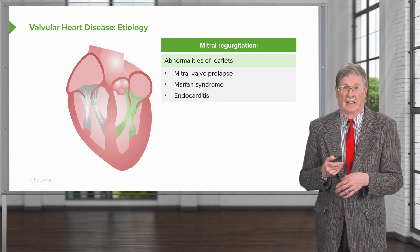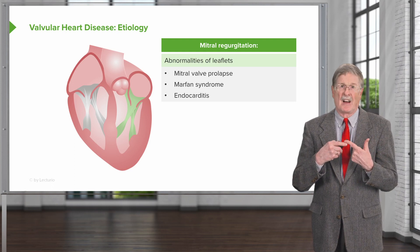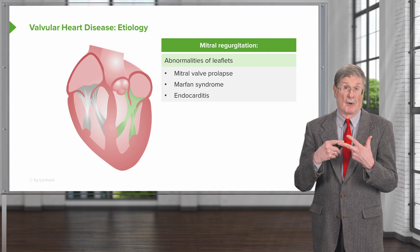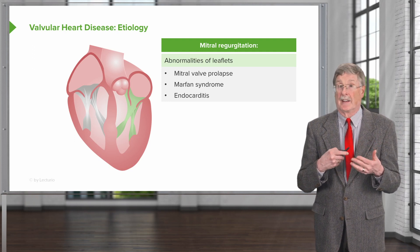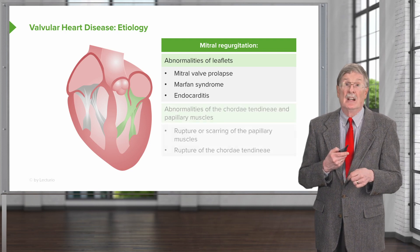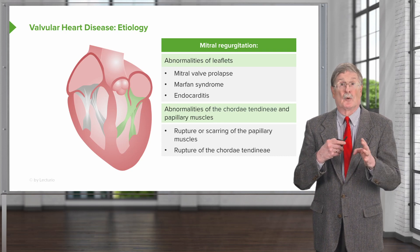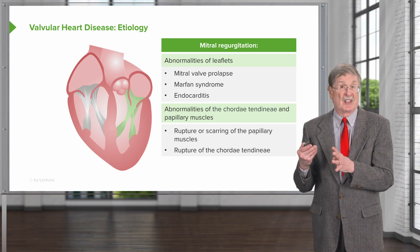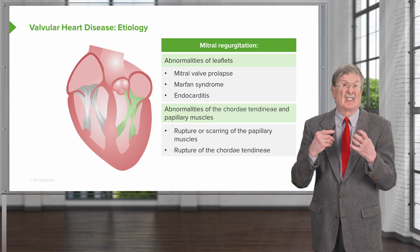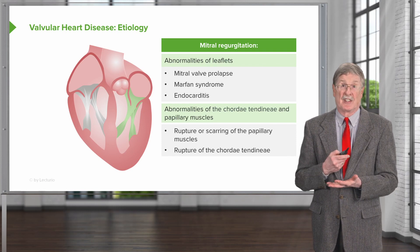Mitral regurgitation, on the other hand, is usually due to abnormalities of the leaflets — mitral valve prolapse, defective extracellular matrix synthesis such as in Marfan syndrome, or due to endocarditis. Those are the common causes of mitral regurgitation. You can also have abnormalities of the chordae and the papillary muscles — rupture or scarring of the papillary muscle due to ischemic heart disease, or rupture of the chordae tendineae due to collagen vascular synthetic disorders such as Marfan's, will also cause mitral regurgitation.